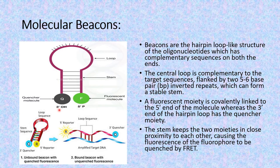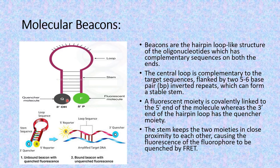On the 3-prime end of this probe is the quencher molecule, and on the 5-prime end, covalently linked to it, is the fluorescent molecule. As we have seen in our previous video on the TaqMan technique, because of fluorescence resonance energy transfer (FRET), until and unless the quencher is in close proximity with the fluorescent molecule, we won't be able to detect the fluorescence. The stem part keeps these two molecules together in close proximity, and the fluorescence of the fluorophore is quenched by FRET. We are unable to detect it until the stem-like structure opens up.